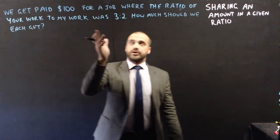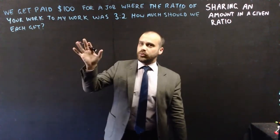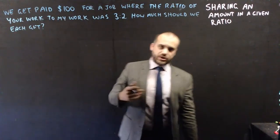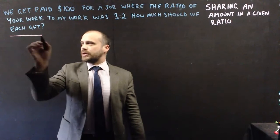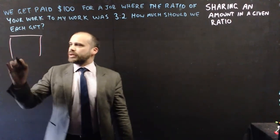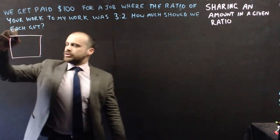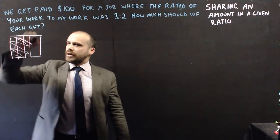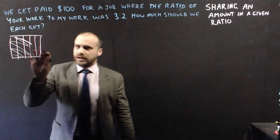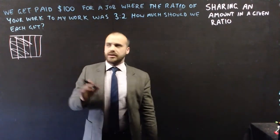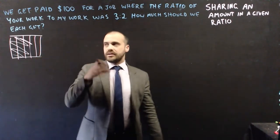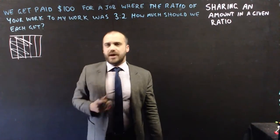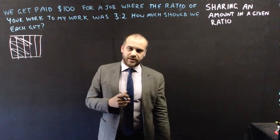We get paid $100 for a job where the ratio of your work to my work was 3 to 2. How much should we each get? Maybe we were mowing a lawn — you mowed more of it and I mowed the leftover bit. You can see you mowed more than I did. The ratio is 3 to 2, which means you should get paid more.